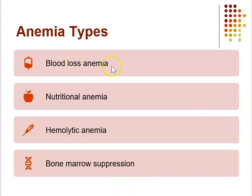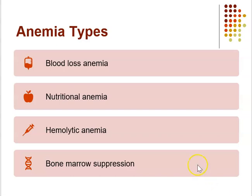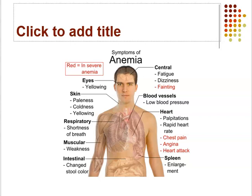Types of anemia include blood loss anemia — acute or chronic — nutritional anemias such as iron deficiency, folic acid deficiency, and vitamin B12 deficiency, hemolytic anemia involving cell lysis, and bone marrow suppression where the body makes very little RBCs. The manifestations of anemia depend on severity, how quickly it develops, and other factors such as age and health status. Many manifestations are compensatory mechanisms.